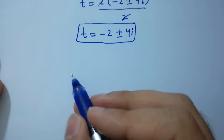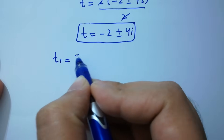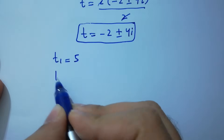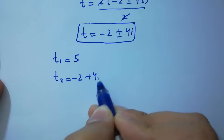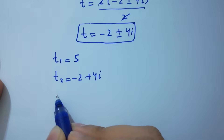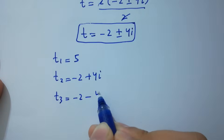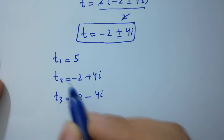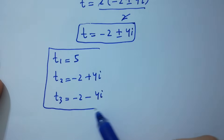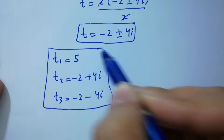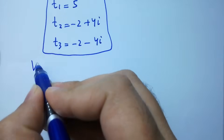So here t₁ equals 5, t₂ equals minus 2 plus 4i, and t₃ equals minus 2 minus 4i. We have three solutions. Now I'm going to verify.